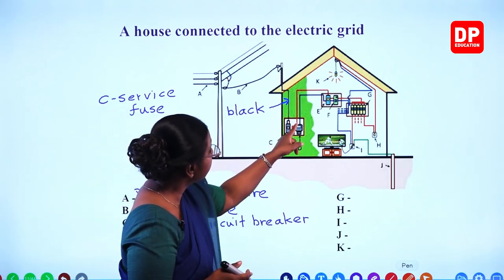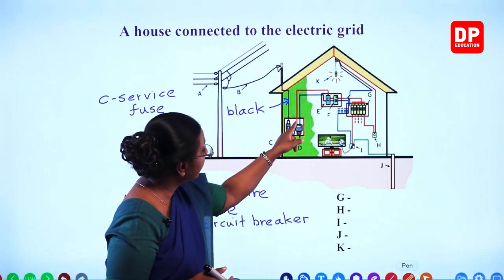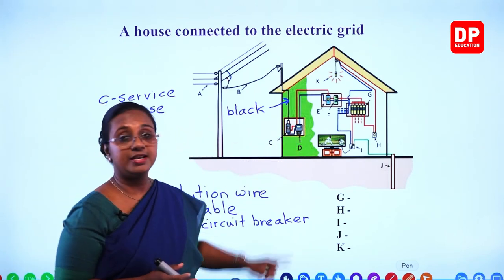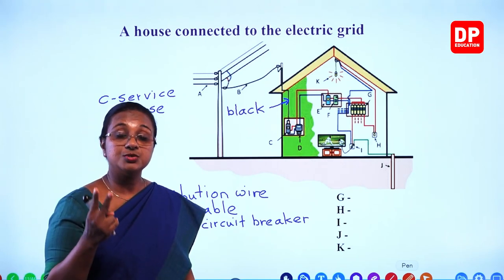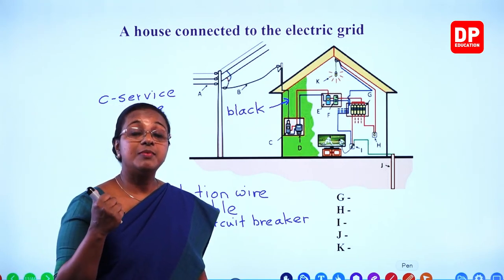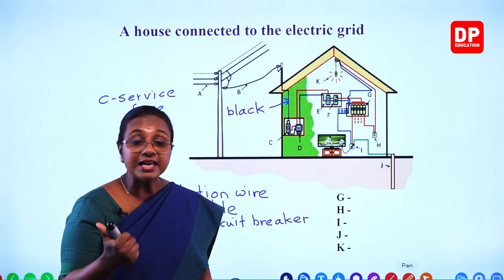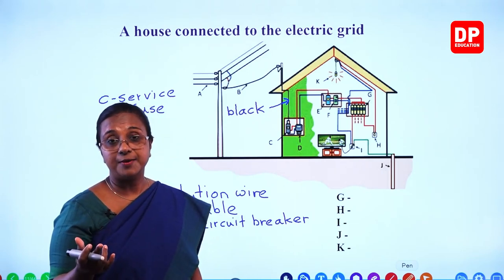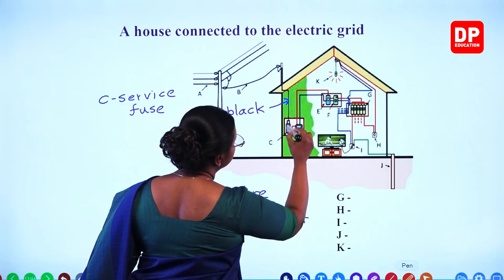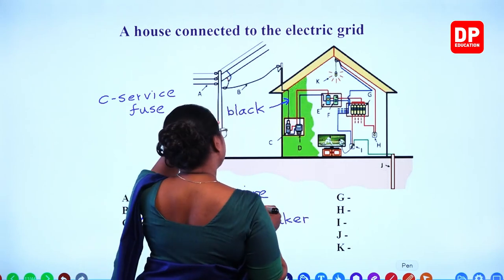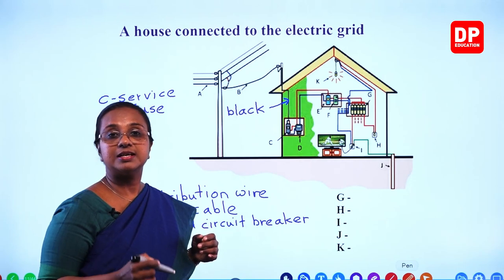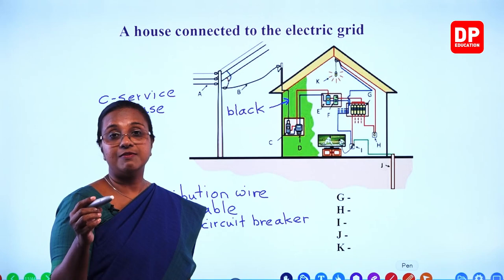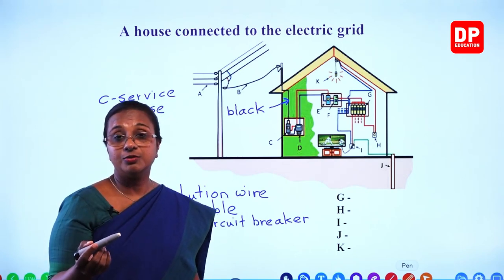From the overload circuit breaker, you can see two cables: a red or brown color one and a blue color one. The red or brown color wire is the live wire and the blue color one is the neutral wire. Current flows into a component through the live wire and comes back out through the neutral wire — it must be a complete circuit.